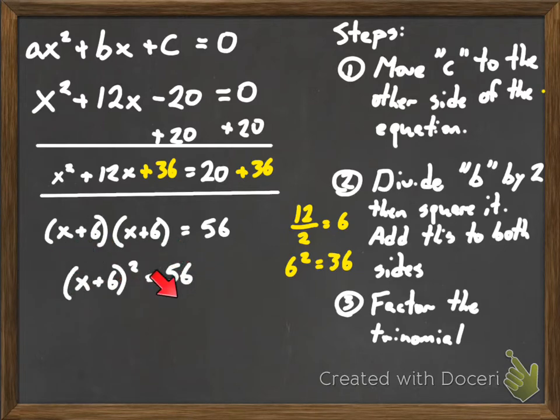Now we're done. We've factored it. We don't need to solve it. It's not asking us to solve anything right now. If you did have to solve it, what you would do is you'd take the square root of both sides, and then it would be x plus 6 equals plus or minus radical 56, and then you can subtract 6 from that. So it would be plus or minus radical 56 minus 6.